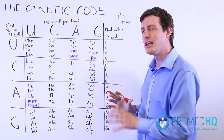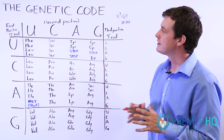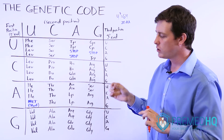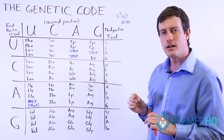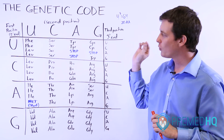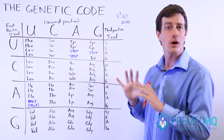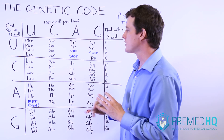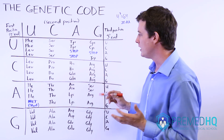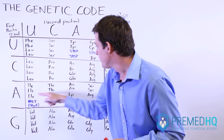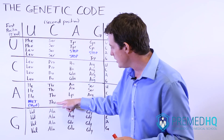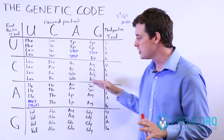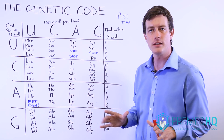Another vocabulary term you might hear is that the genetic code is unambiguous. What that means is that if you know a three-base codon, it will only encode one amino acid — there's no variation, no ambiguity. For example, ACG is threonine and nothing else. Whenever you have ACG, that will encode the amino acid threonine.